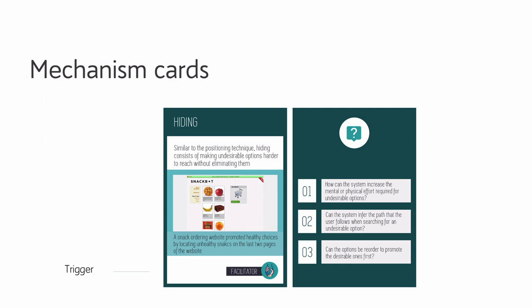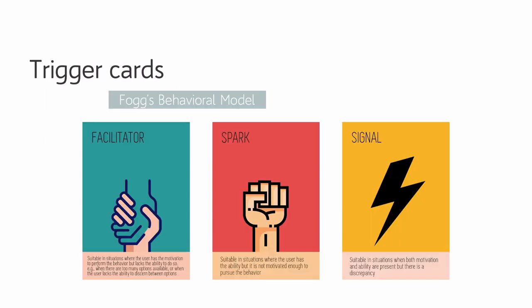We also present the trigger. Leveraging Fogg's behavioral model, trigger cards identify three types of triggers: Facilitators, Spark, and Signal, and identify which type of nudges might be used in different situations. Facilitators aim at increasing individuals' ability. Sparks aim at increasing individuals' motivation. And Signal acts as a reminder.